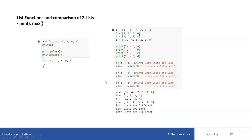Now if you want to compare two lists, how is the comparison done between two lists or multiple lists? So I am defining four different lists. A is equal to 1, -4, -7, 3, 9, 2. B is equal to 1, 2, 3, 4 — only 4 members are there. C is having the same values in the same order as B. So list B and list C both are having the same values in the same order. List A and list D also have the same values.